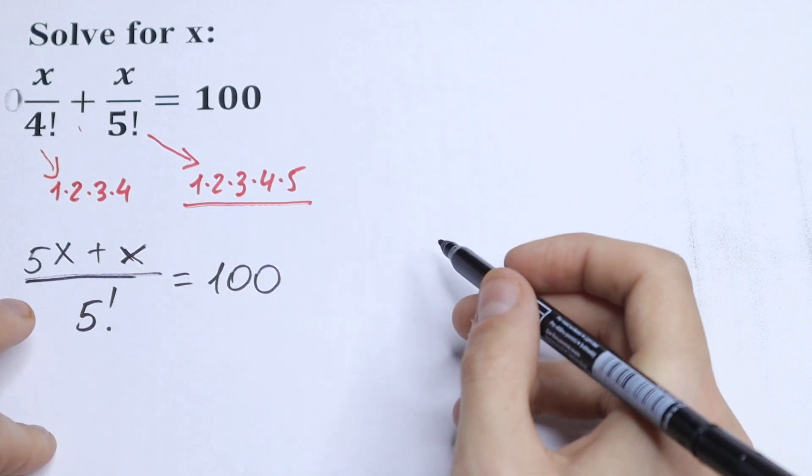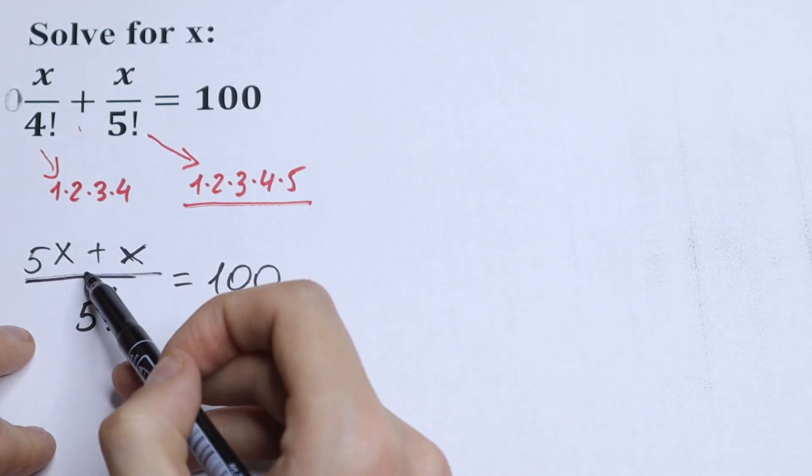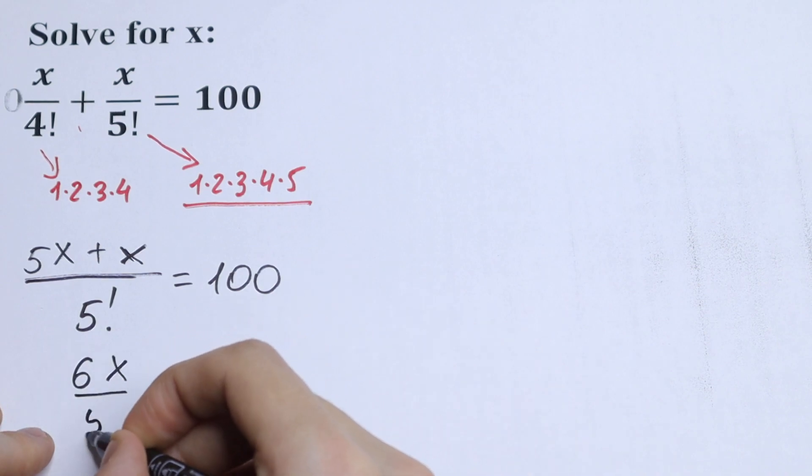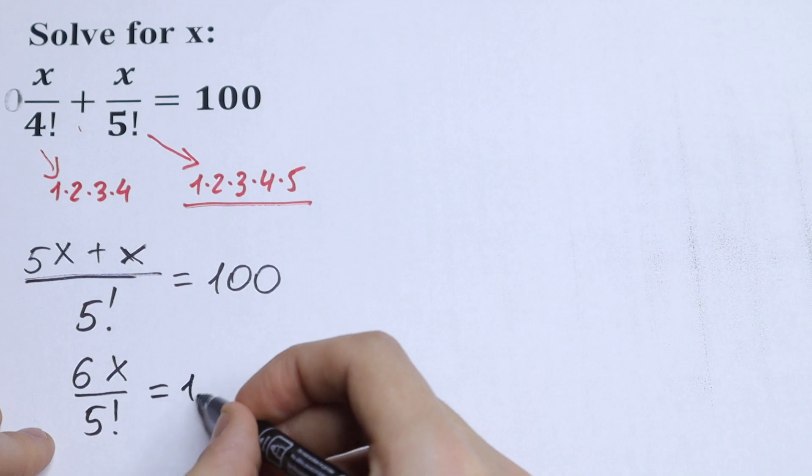So let's solve this equation. We will have 5x plus x, which is 6x over 5 factorial equals 100.